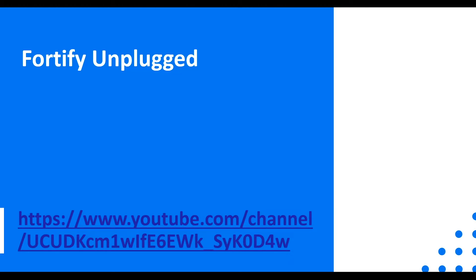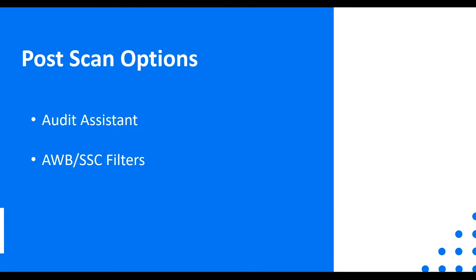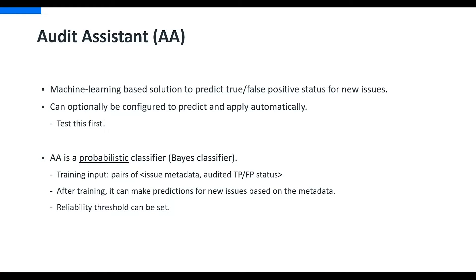If anybody would like to see more information on data flow cleanse rules in action, please check this channel for how-to videos that will go through them in detail. We've talked about some of the pre-scan and during-scan options. Now let's talk about ways you can filter noise post-scan. The main two ways would be Audit Assistant and then filters through either Audit Workbench or Software Security Center. This is actually where I prefer to start when looking at reducing noise on the Software Security Center side.